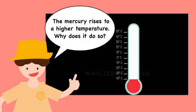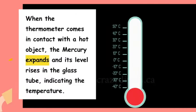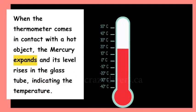The mercury rises to a higher temperature. Why does it do so? When the thermometer comes in contact with a hot object, the mercury expands and it rises in the glass tube indicating the temperature.